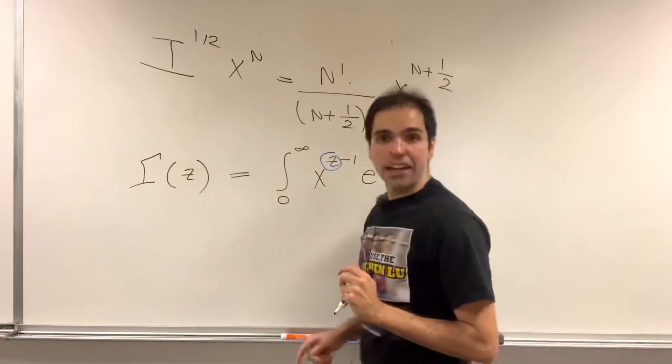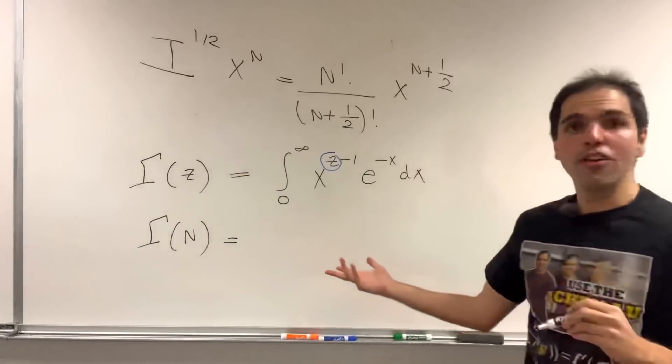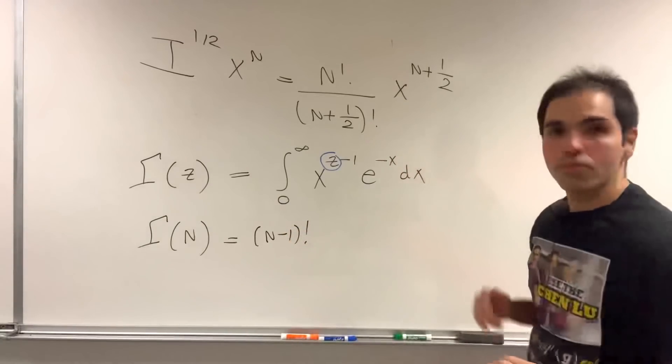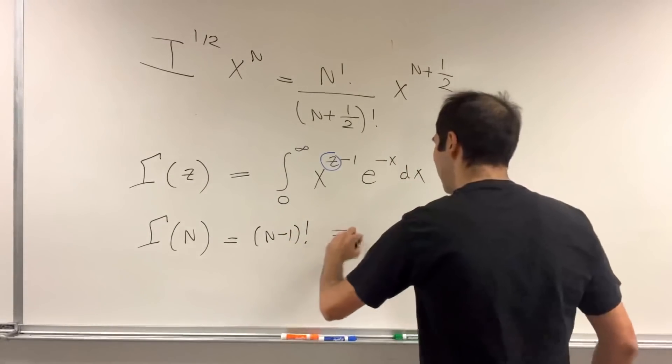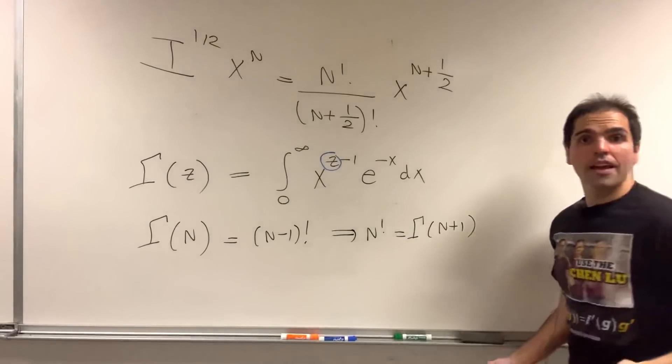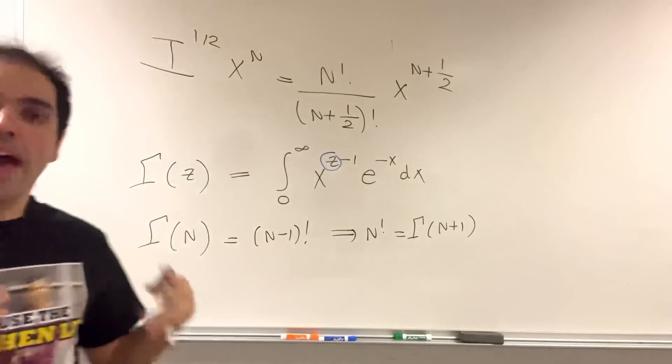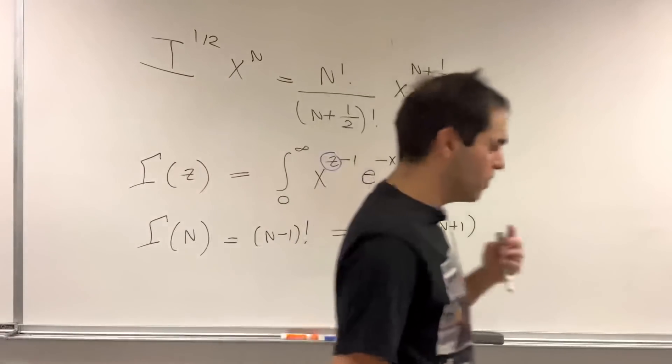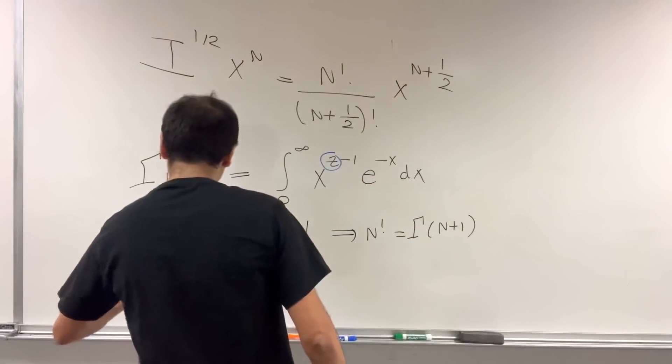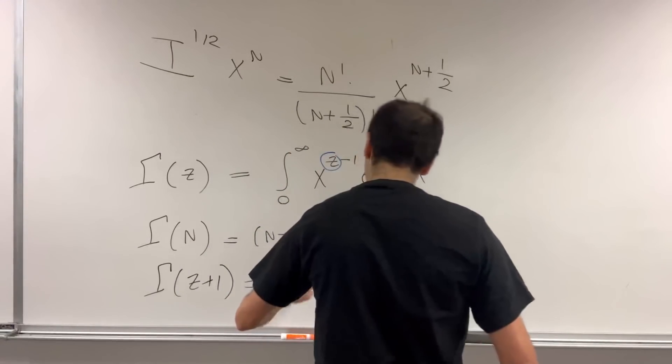And the cool thing is, this does have properties very similar to the gamma function. And in fact, for integers n greater or equal to 1, gamma of n is the same thing as n minus 1 factorial. Or conversely, n factorial is gamma of n plus 1. And it also has a multiplicative property similar to n plus 1 factorial equals n plus 1 times n factorial. But in this case, what we get is that gamma of z plus 1 is z times gamma of z.